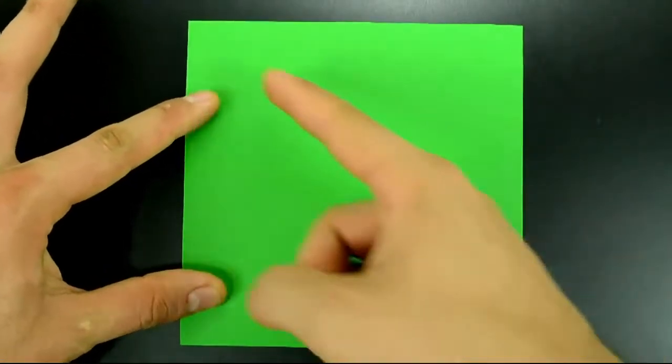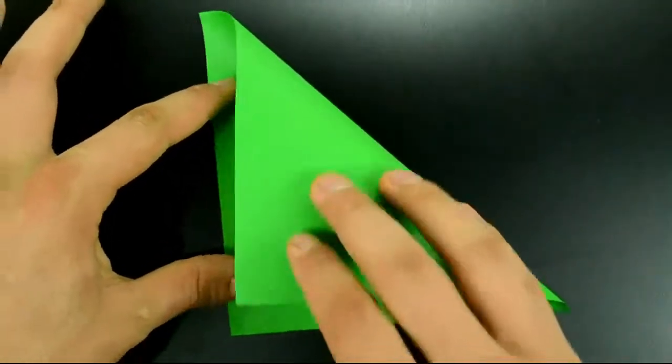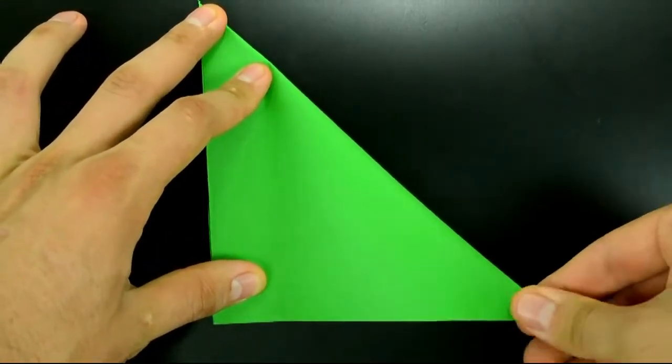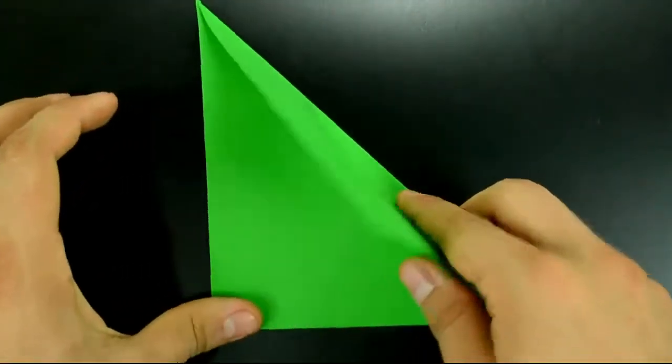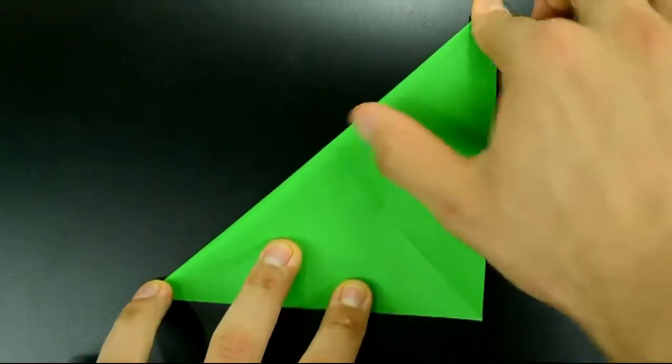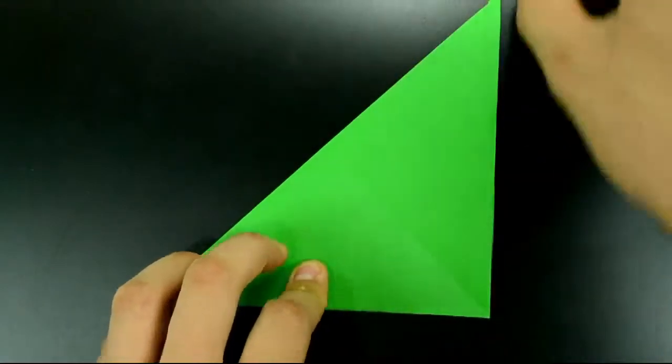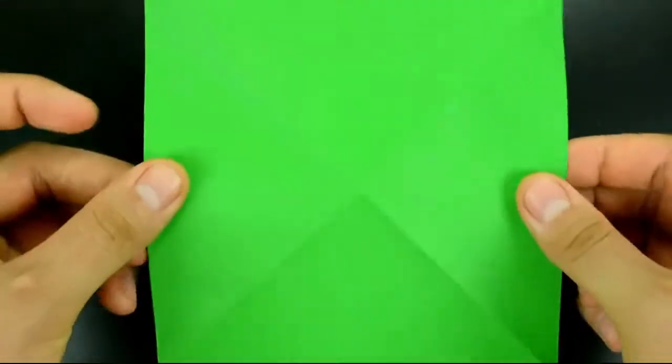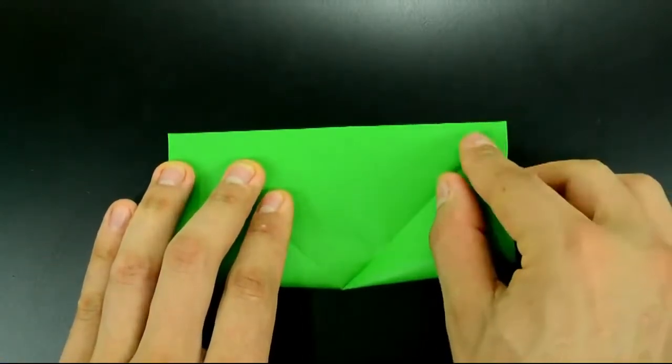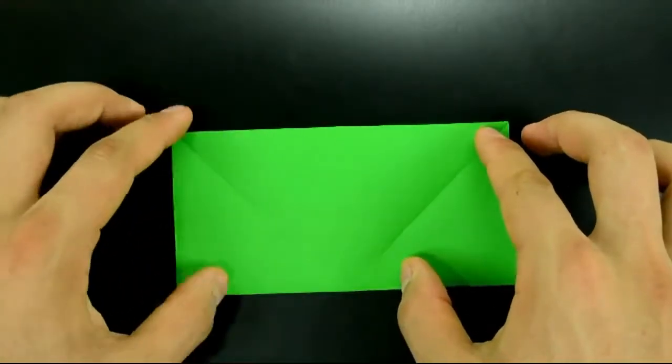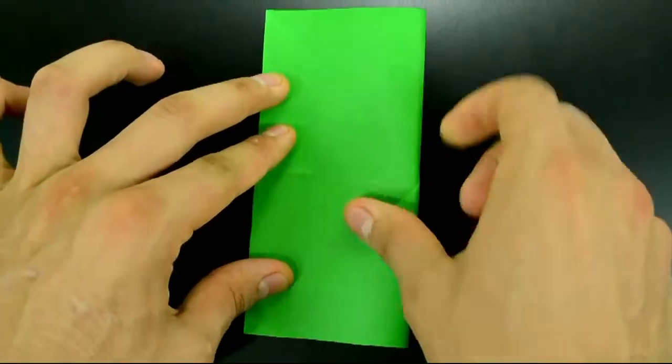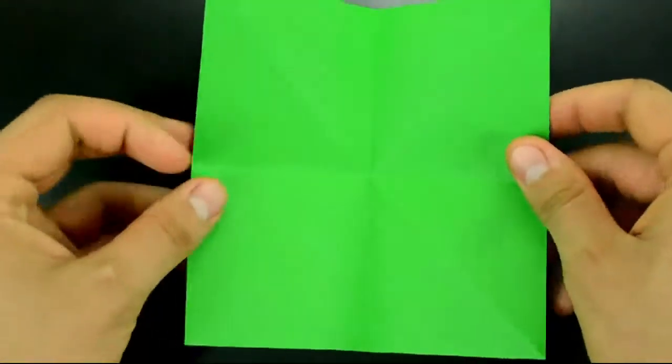And the first step is to fold in half on both diagonals, like a letter X. Just like that. First this side. Then the opposite. Now turn over. And fold in half on the horizontal and vertical. Turn over again.